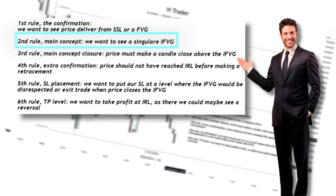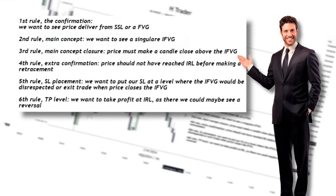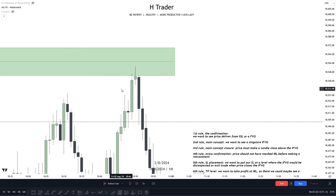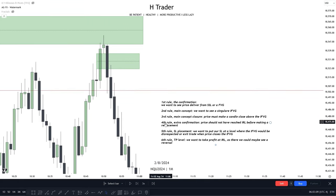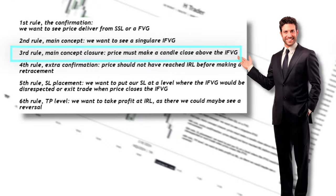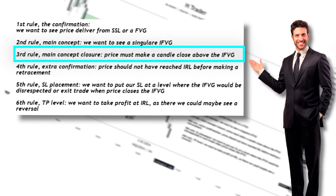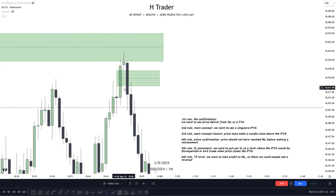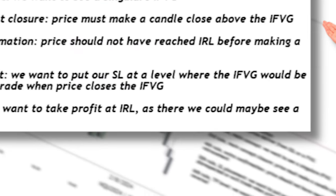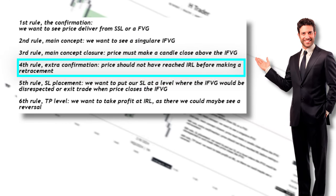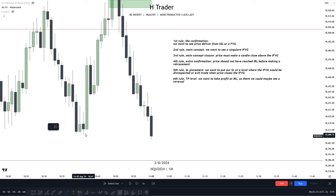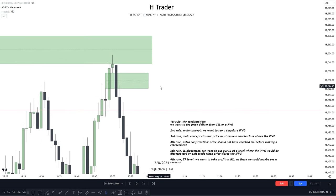Second rule is the main concept: we want to see a singular inversion fair value gap. After price delivered from that fair value gap, there was a bullish fair value gap in between, and we can see price made a close beneath it, which confirms our main concept. The third rule is main concept closure — price must make a candle close above the inversion fair value gap, or in this case beneath it. We can see price did indeed do that, so now we are ready to take our trade entry. Then the fourth rule — extra confirmation — price should not have reached internal range liquidity before making a retracement, and we can see that it has not.